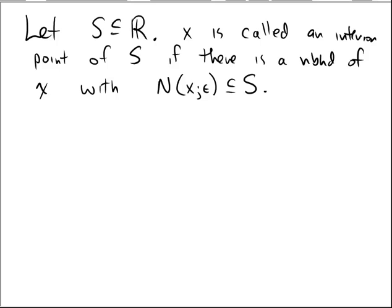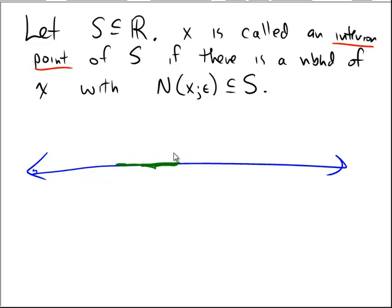Okay, now if we let s be a subset of r, we say that x is an interior point of s, if there's a neighborhood of x, with the neighborhood completely contained inside of the set s. So again, on a number line, if we said that s was something like, let me do s in green here. So s might be, let's just do a fairly simple set. There we go. Open interval.